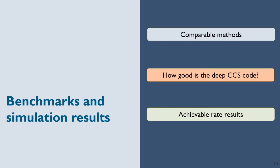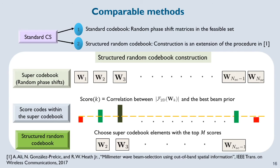I will now discuss simulation results related to our paper. We compare our deep learning based approach with standard random phase shift based CS and the structured random technique from prior work. In the structured random technique, the transmitter first constructs a super codebook that has large number of random phase shift based matrices. Then it selects the best M matrices within this set whose 2D DFT magnitudes are maximally correlated with a best beam prior. These M matrices are applied at the transmitter for channel measurements.